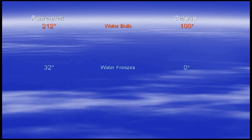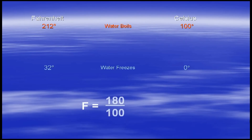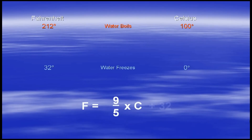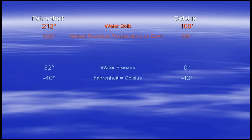Many people memorize the formula that relates Fahrenheit to Celsius: F equals nine-fifths C plus 32. But who needs to memorize that? You know that the temperature difference between freezing and boiling water is 180 degrees Fahrenheit and 100 degrees Celsius — that's the same as nine-fifths times C. At zero degrees C, the temperature in Fahrenheit is 32, so we just add 32. If you remember the boiling and freezing points of water on both scales, you don't need to memorize the formula. Setting F equal to C and solving, we get C equals F at negative 40.